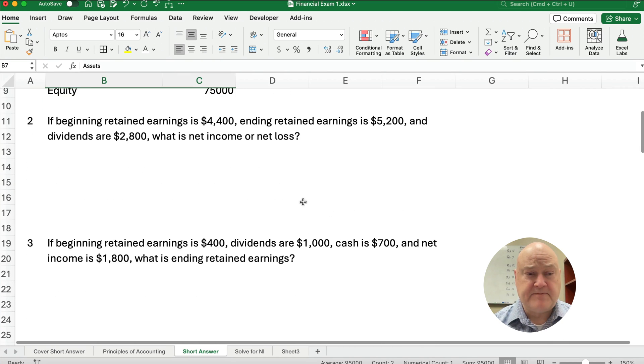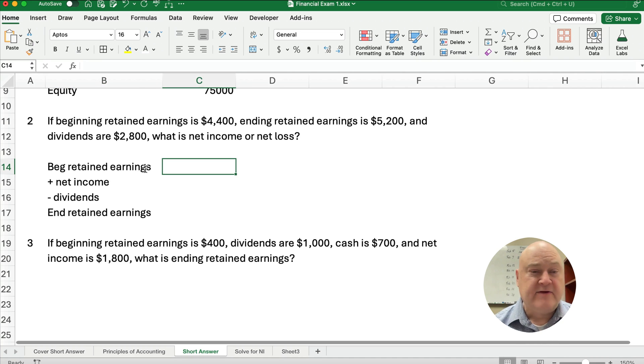Let's keep going. If beginning retained earnings is $4,400, ending retained earnings is $5,200, dividends are $2,800, what is net income or net loss? Well, one thing we know is beginning $4,400, the ending is $5,200, dividends are $2,800. So what is our net income?